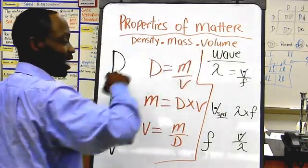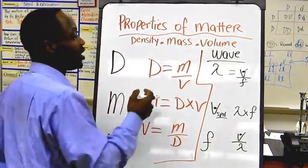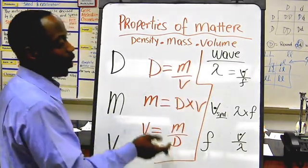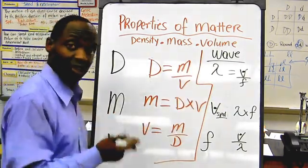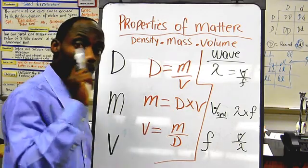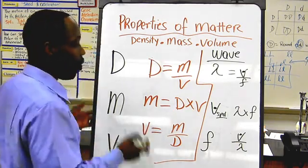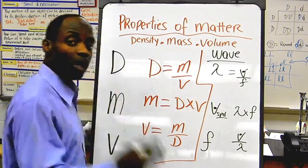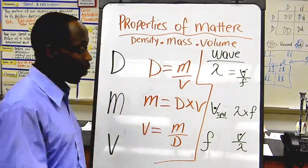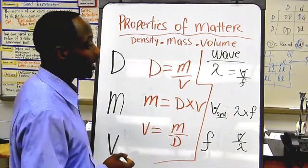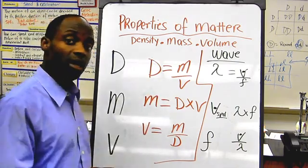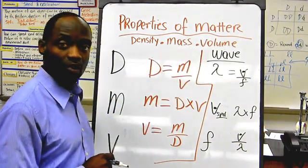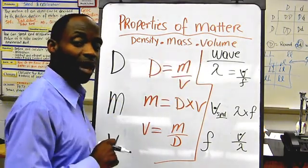So look at that. I use the same principle to calculate two different properties, or three different properties, or six different properties using one technique. And all I need to know exactly is what are the players, and who goes on top, and what am I calculating? So that's exactly how you calculate or the equations for calculating the properties of matter and the properties of a wave.